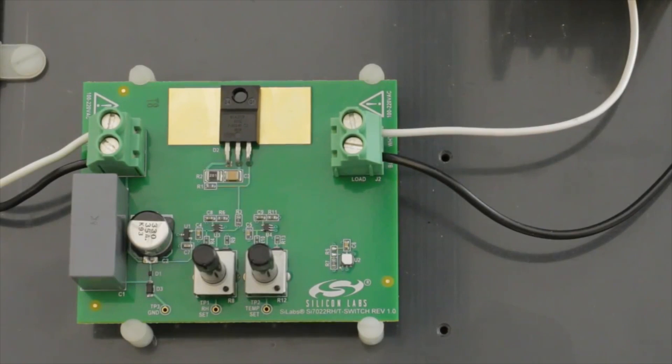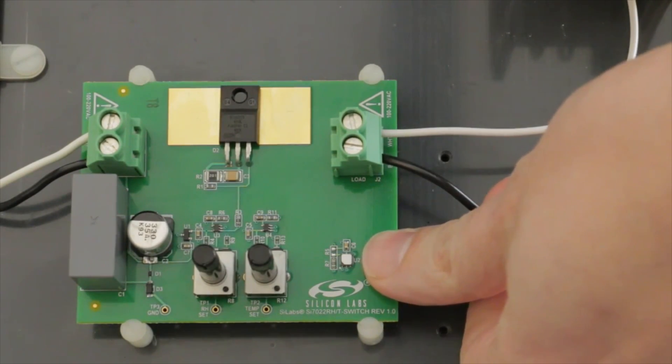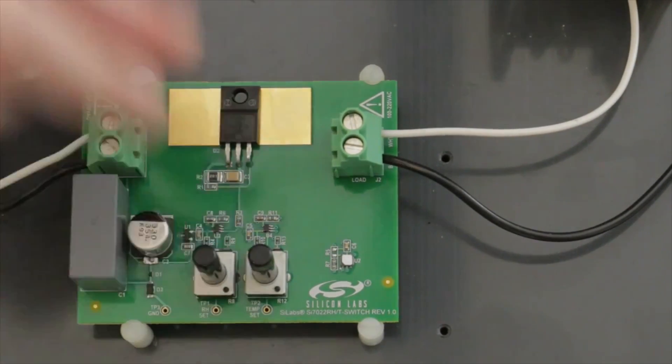The way this circuit works, it uses our humidity temperature sensor. This is connected to a couple of op-amp comparators here that use two potentiometers to set a reference voltage.